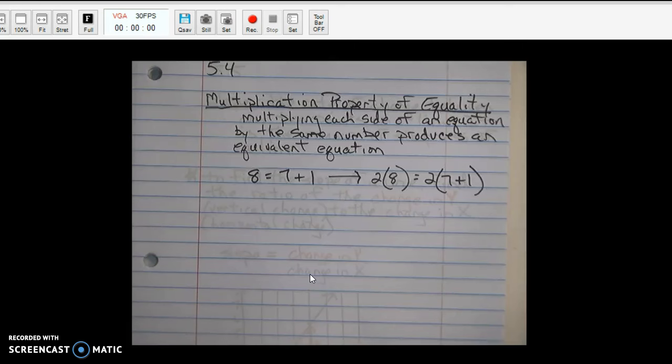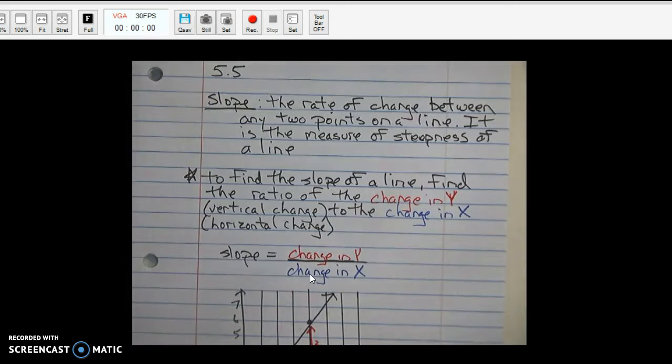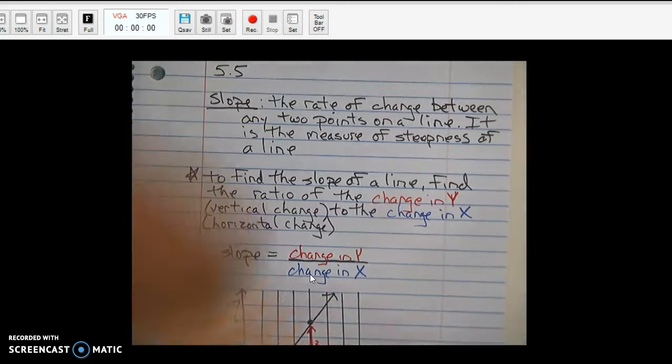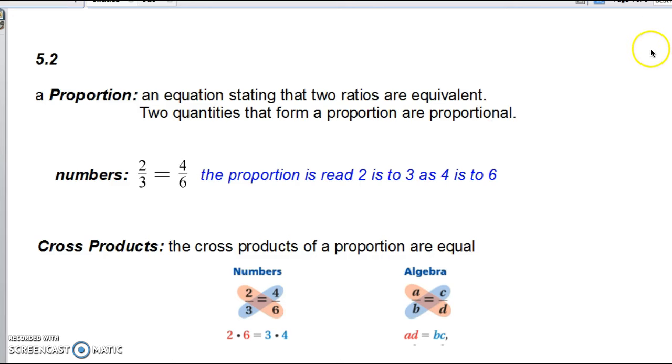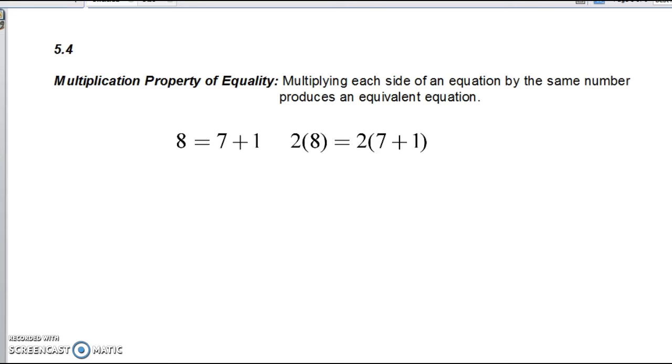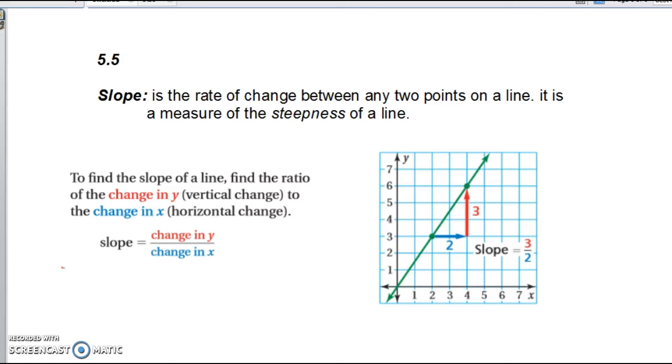All right. One of the most fun yet challenging parts of this chapter is this next one. So, go to your next page. It's called slope. Slope. I'm going to go back to the Promethean board. Slope. 5.5 is the rate of change between any two points on a line. How it changes from here to here. It is a measure of the steepness of the line.